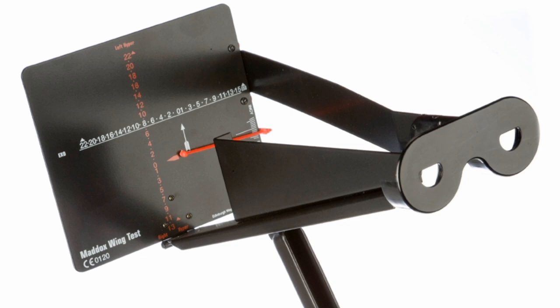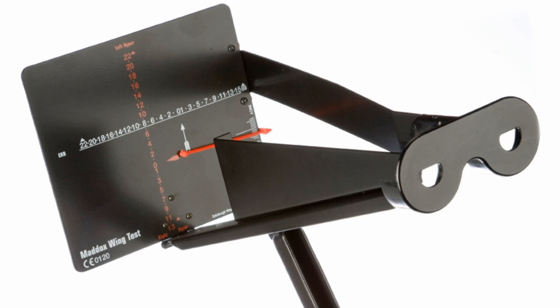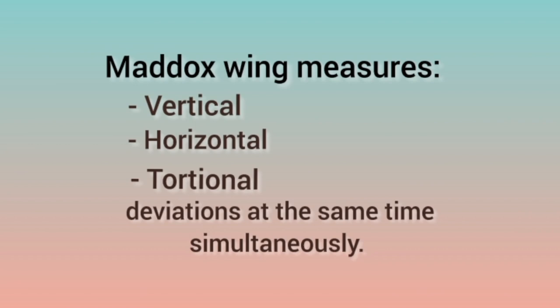One important thing to note: when holding the Maddox Wing using the retractable handle, you should not hold it straight — it should be 15 degrees depressed, slightly below the reading distance angle. The Maddox Wing measures vertical, horizontal, and torsional deviations simultaneously. This makes it a quick method that does not require a lot of time to evaluate all types of deviations.